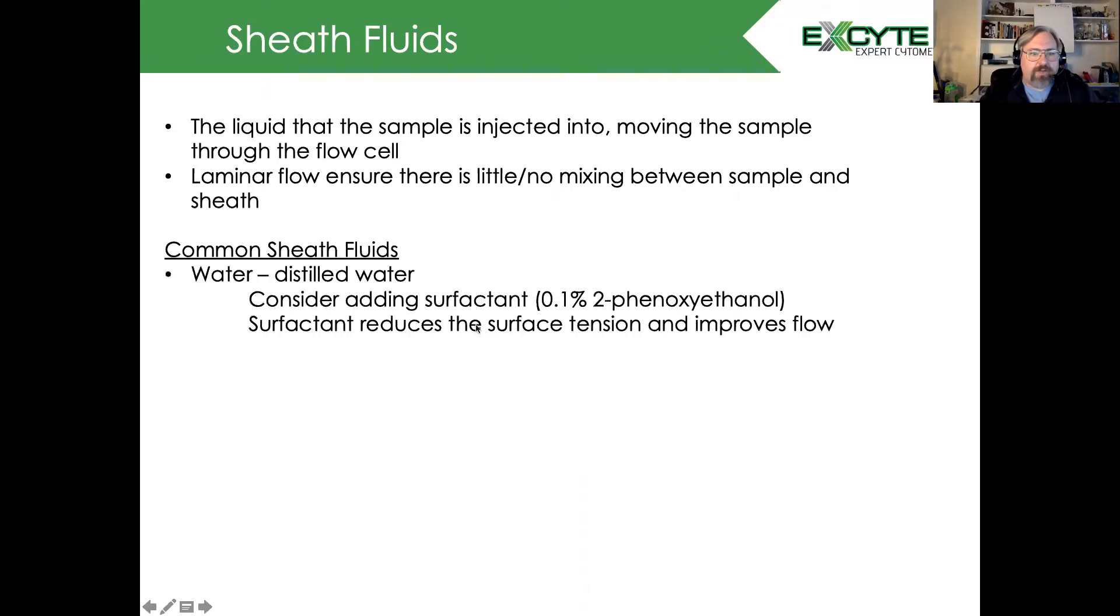A couple of common sheath fluids include water, just distilled water. I recommend adding a surfactant, something like 0.1% 2-phenoxyethanol. This helps reduce the surface tension and improves flow of the sample.